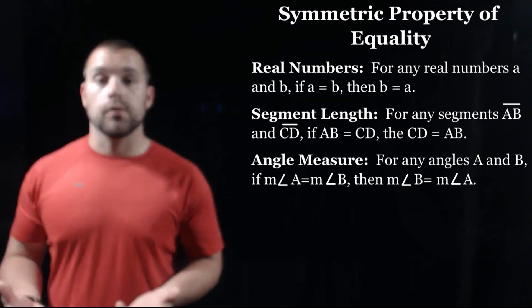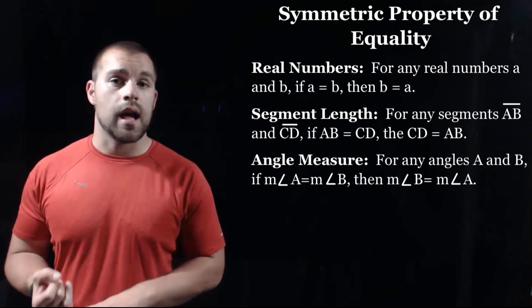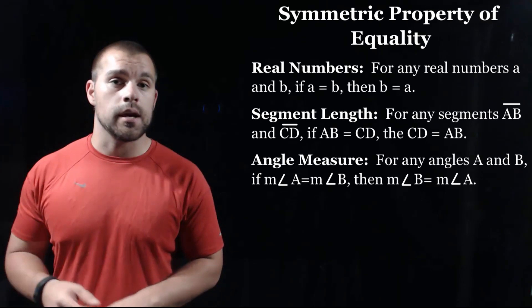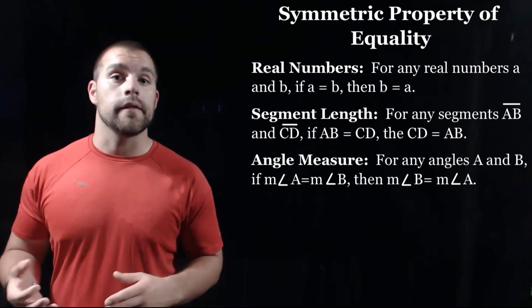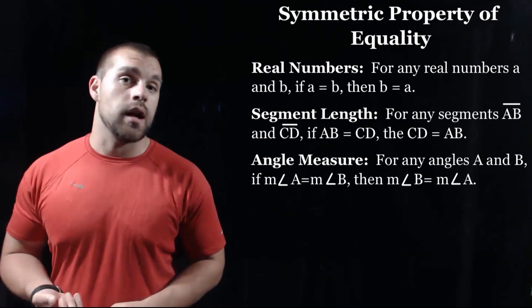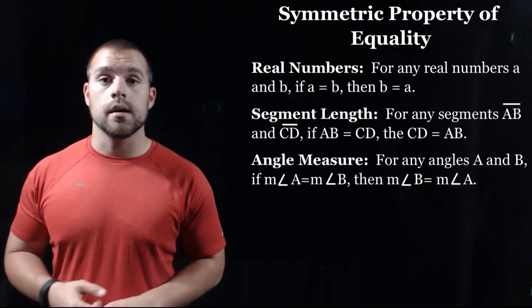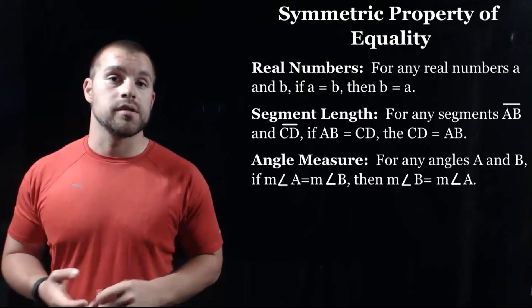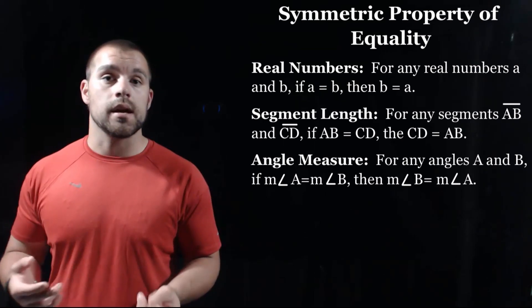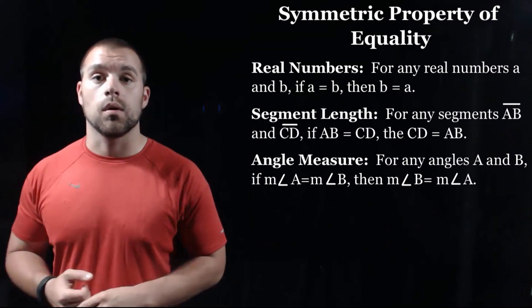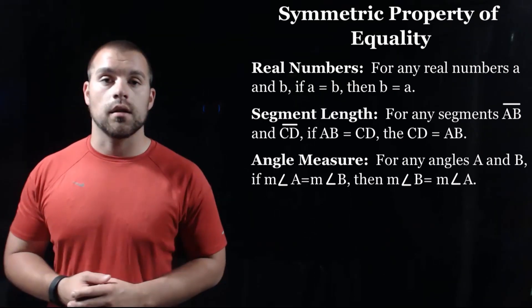And if we're talking about two angles, let's say angle A and angle B, then if the measure of angle A equals the measure of angle B, then the reverse — the measure of angle B — has to equal the measure of angle A.